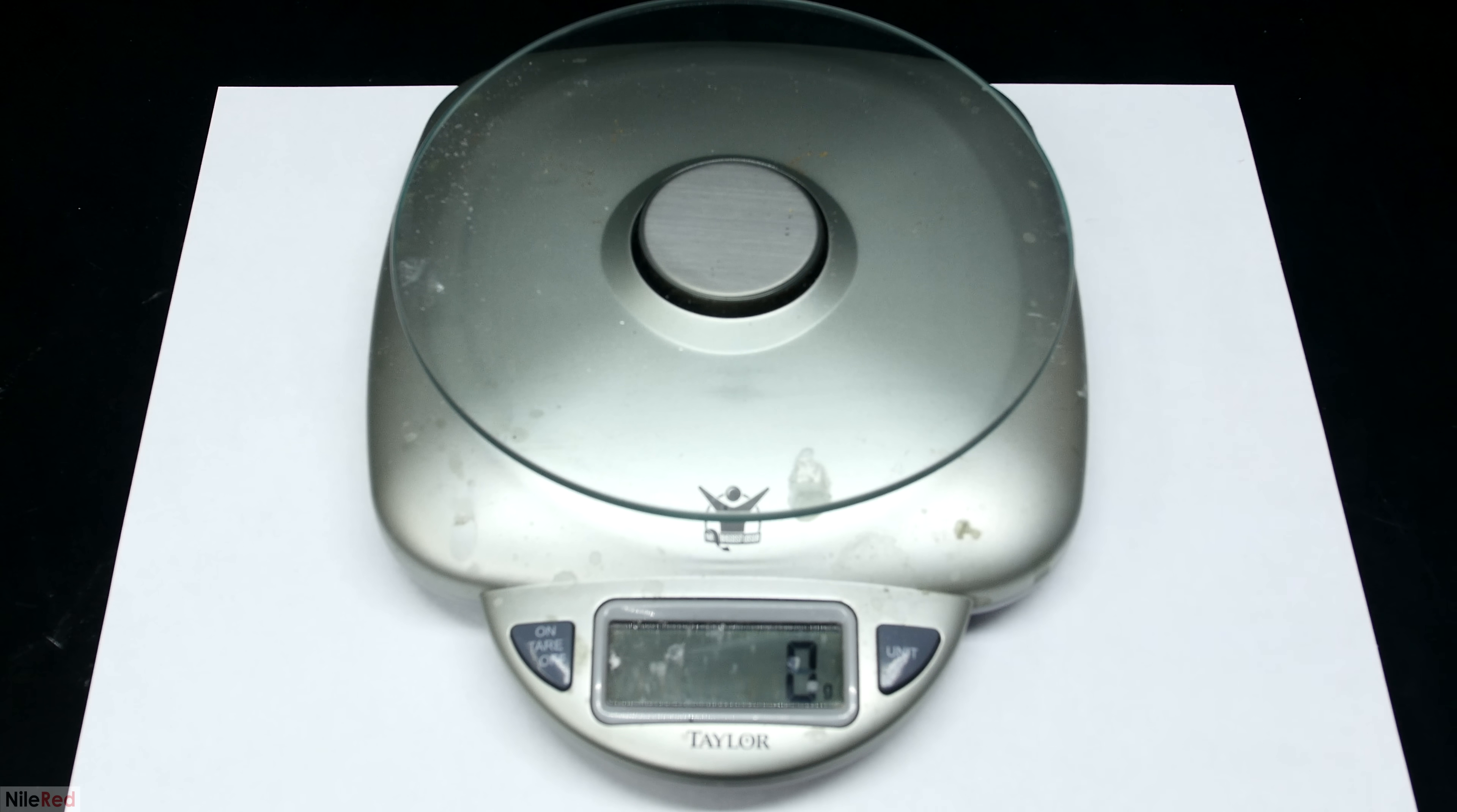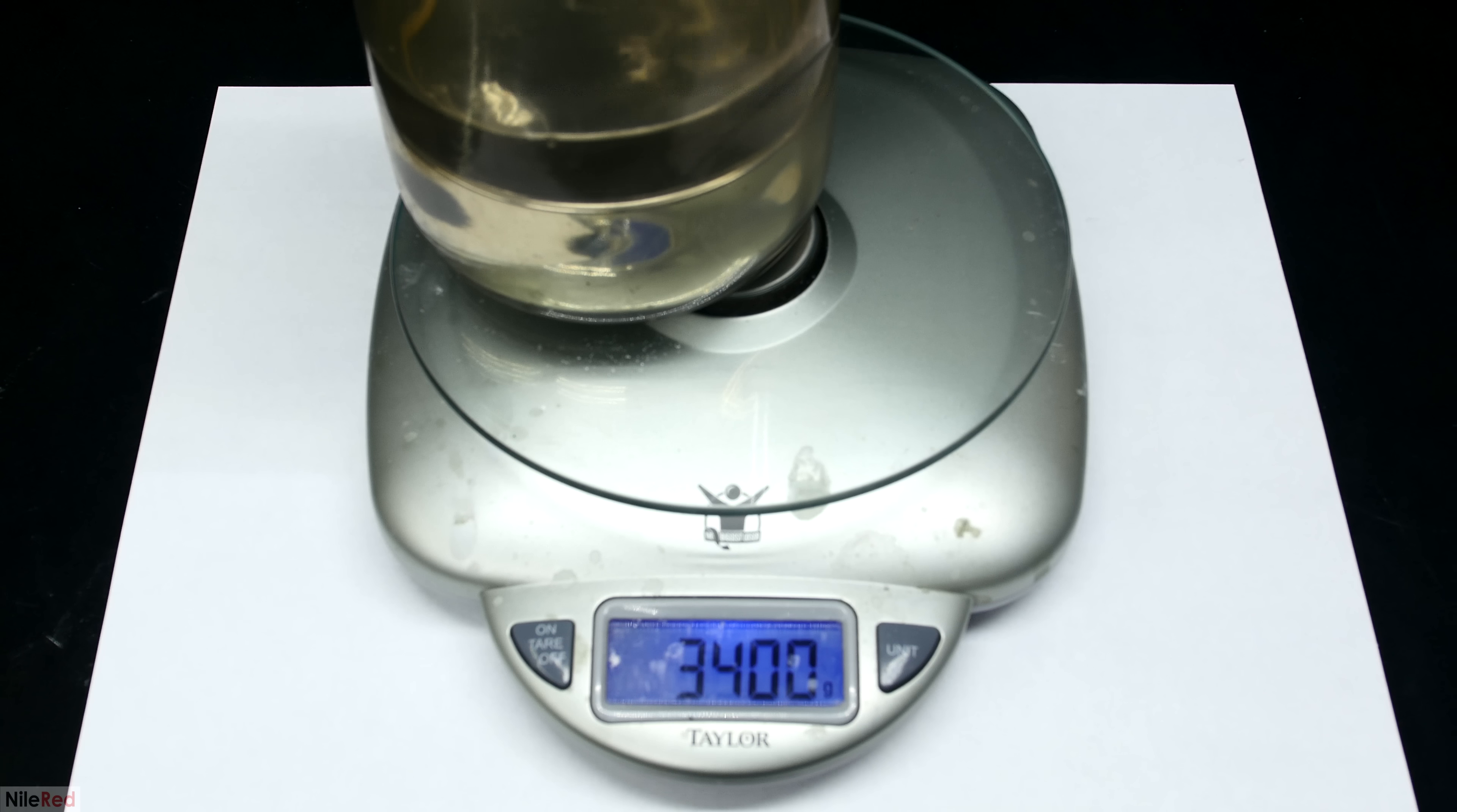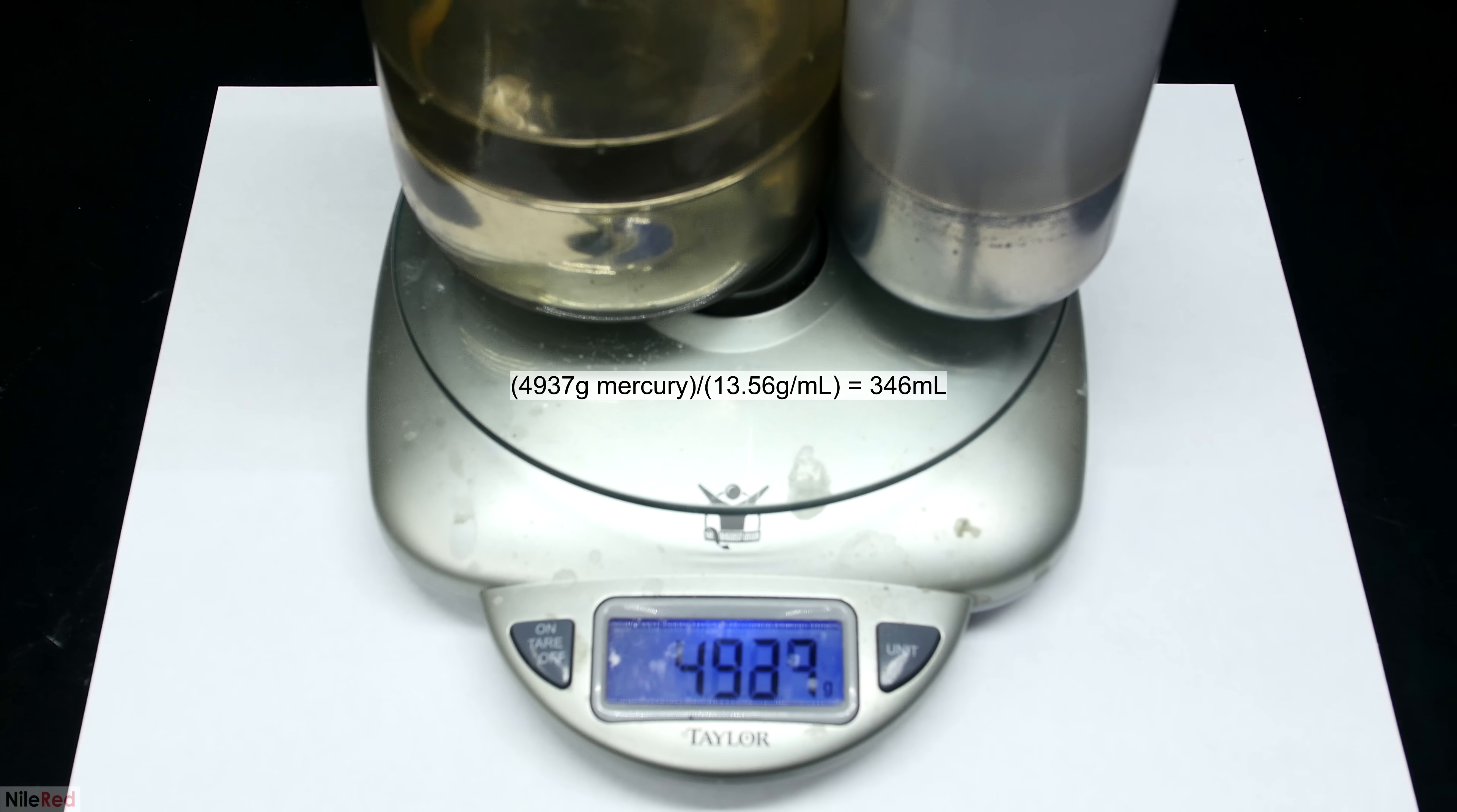Before we start, I'm gonna weigh out the mercury, and this is just to show you guys the mass that we're working with. The mass will be a little bit inflated because it will include the water and the bottle, but you should still be able to see that it's quite heavy. The first bottle alone weighs something like 3.4 kilos, and the second one weighs about 1.5. From this mass, we can approximate the volume of mercury that we have by dividing it by the density of mercury. This obviously won't be super accurate though, because I'm including the mass of the bottle and the water. What it tells me though is that I'm working with something around 350 milliliters of mercury, which helps me decide the size of the flask that I'll distill it in. I'll talk about flask choice a little bit more when we get to the actual distillation.